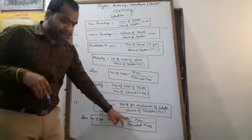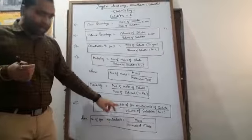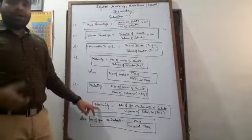So by knowing the value of mass of the given solute and its equivalent mass, you can calculate number of gram equivalents and in the same manner you can calculate the normality.